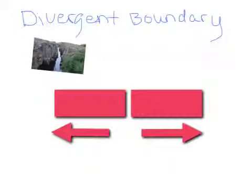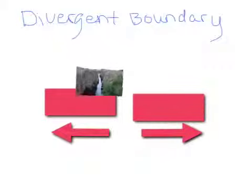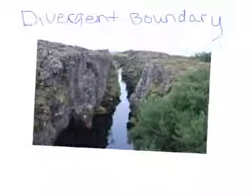Divergent boundary is when the plates go away from each other. Here's an example of a rift valley.